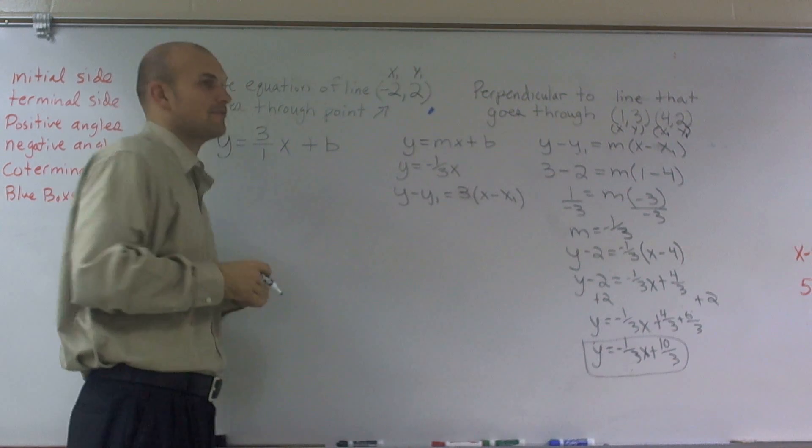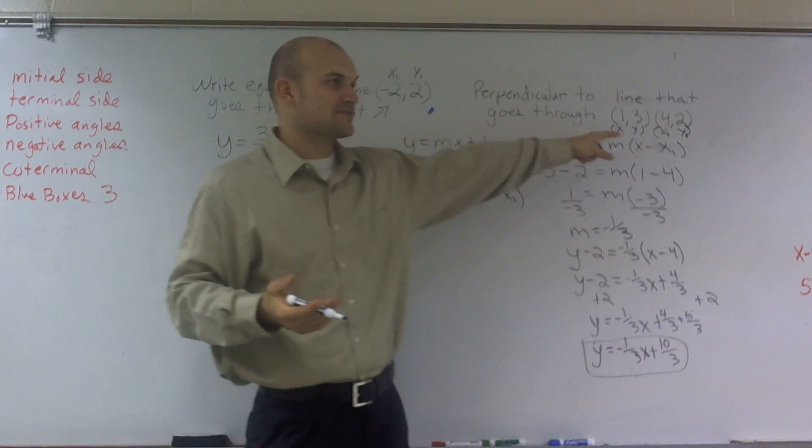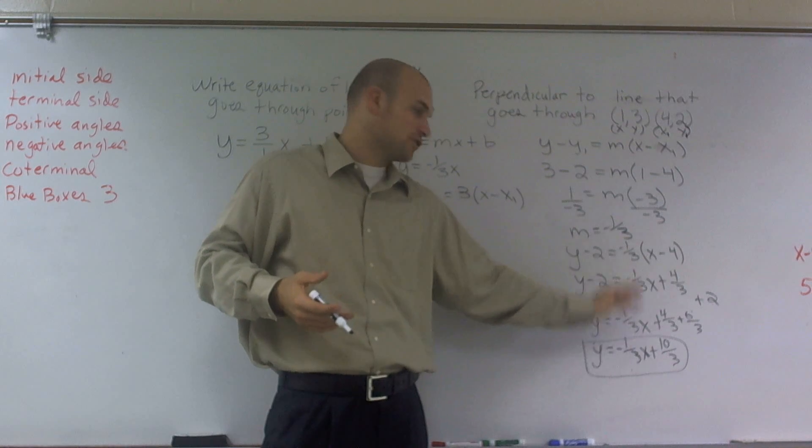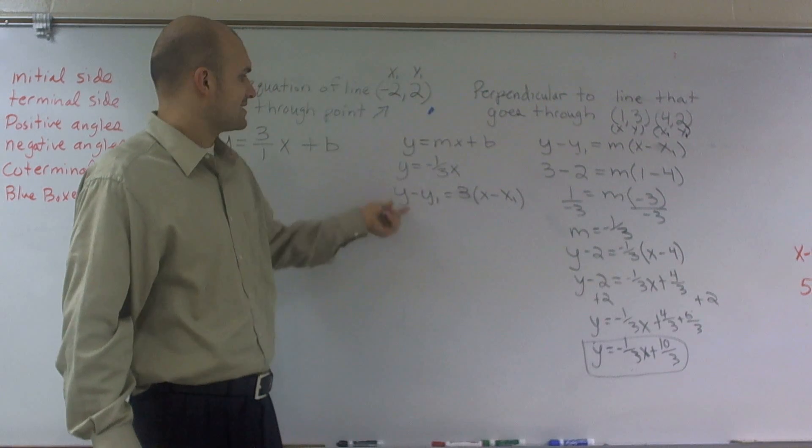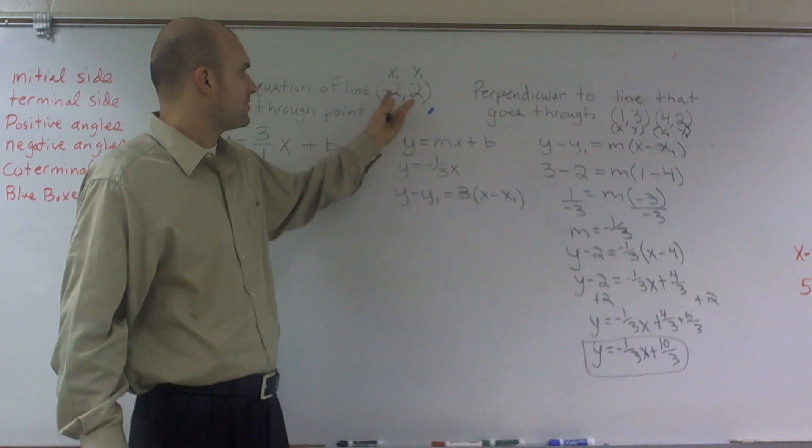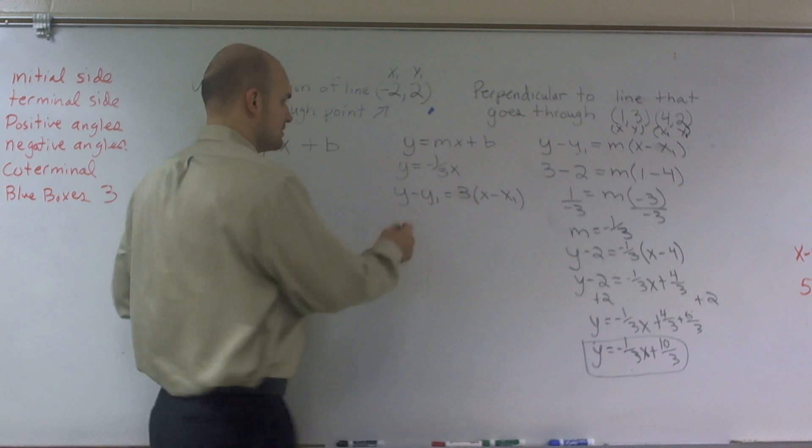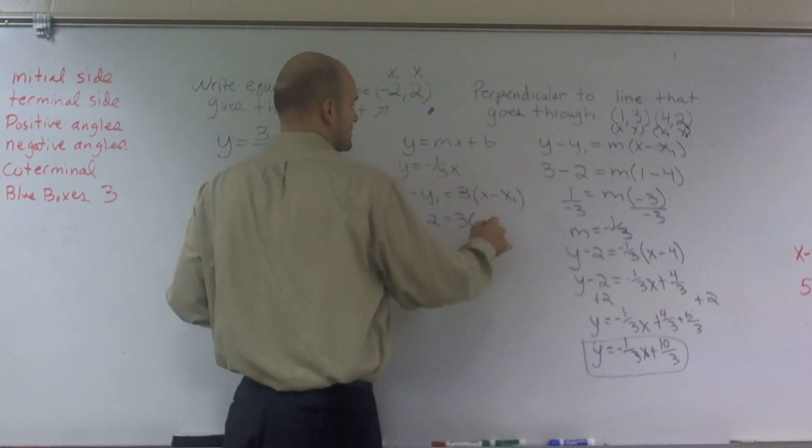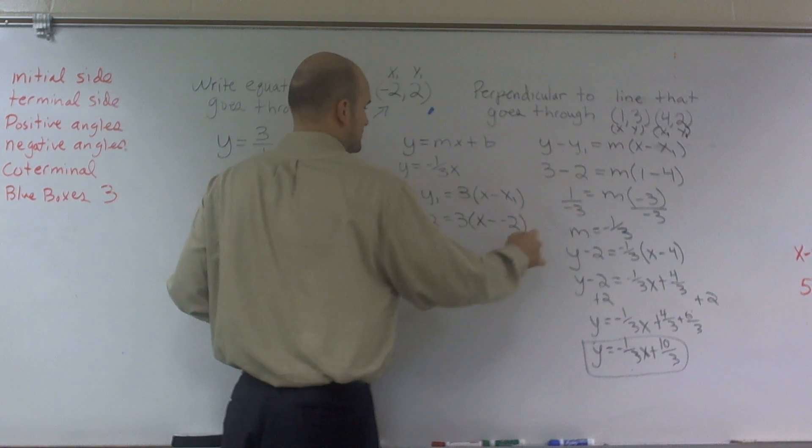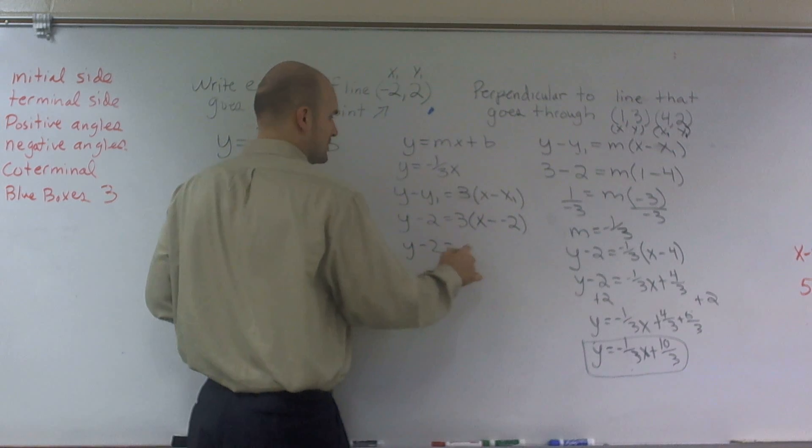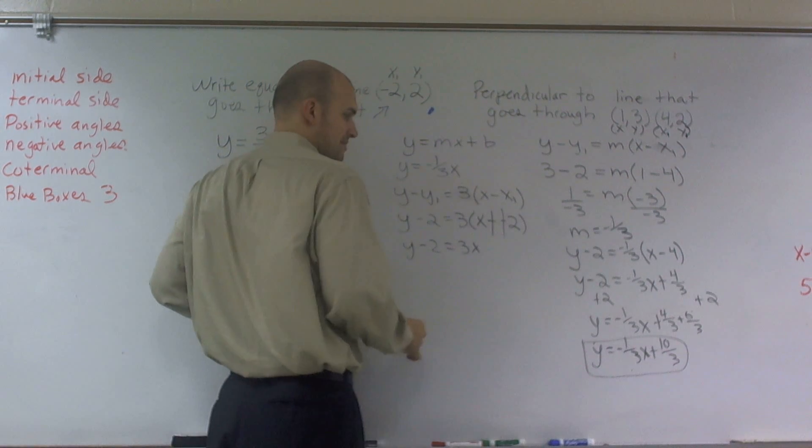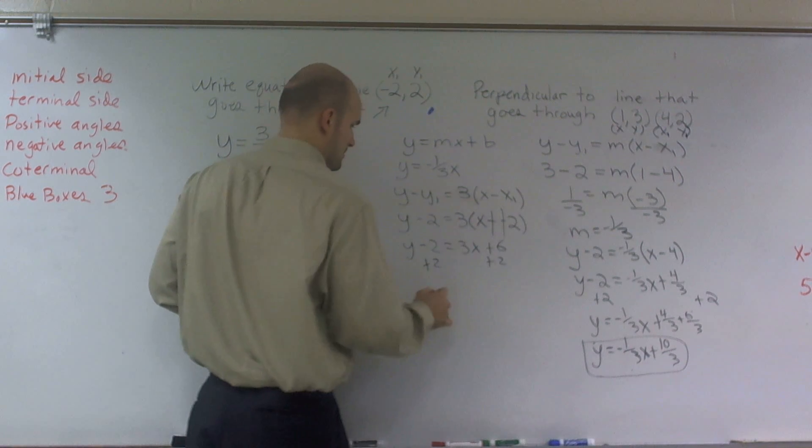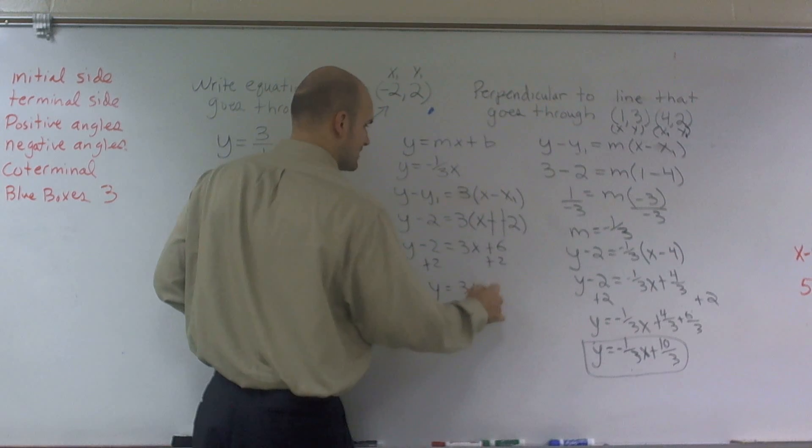Then what I can do is plug these points in, and I'm going to let these represent x1 and y1. We're done with this problem. We just needed this to find the slope. But now, I want to solve for y. So I'm going to let this be y1. So y minus 2 equals 3 times x minus negative 2. y minus 2 equals 3x. Double negative makes it positive. Plus 6, add a 2. y equals 3x plus 8.